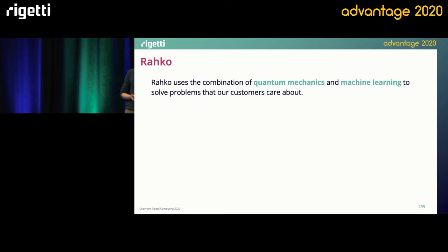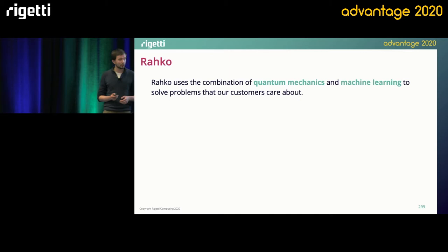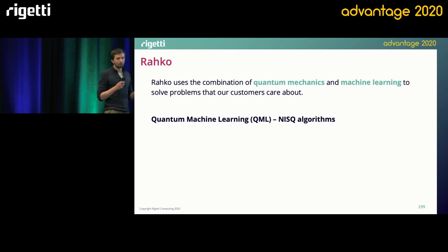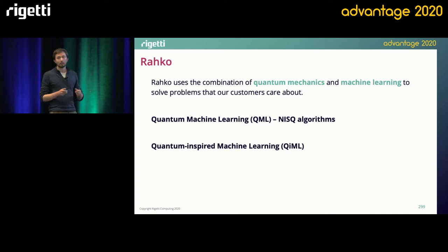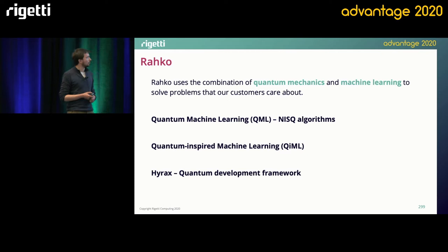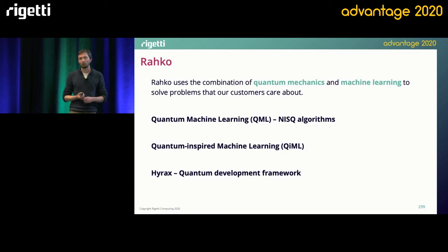RACO is a London-based startup which leverages expertise from quantum computation and machine learning to provide products and solutions to our customers. We have three main objects: the first one is quantum machine learning, where we develop algorithms which aim to be implemented on near-term quantum computers. We also do quantum-inspired machine learning, using our expertise in deep learning and quantum information to create new methods that can help our clients today. And finally, we are building Hyrax, which is a Python-based development toolkit for quantum developers.